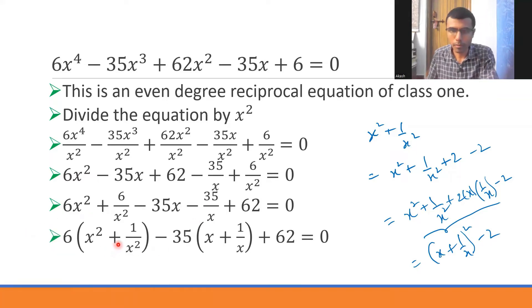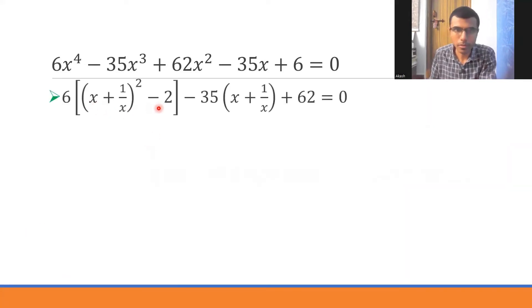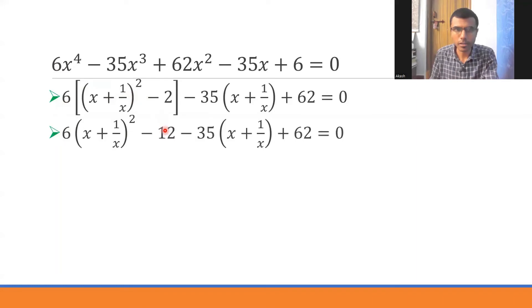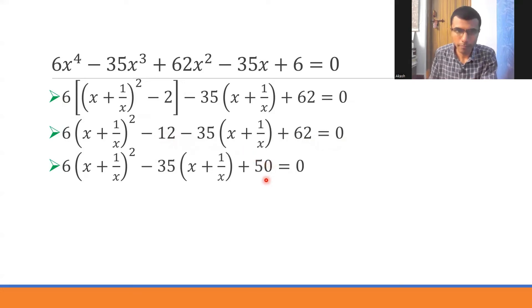Now this one I am going to write as (x + 1/x)² - 2, and the other terms are as it is. Now just multiply: 6(x + 1/x)² - 12, and then other things. Now 62 - 12 is 50, so that would come at the end.